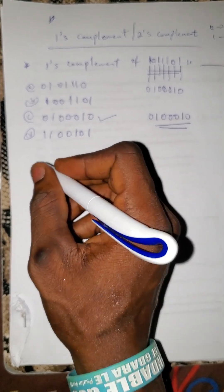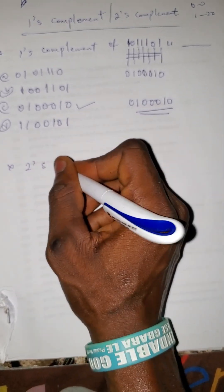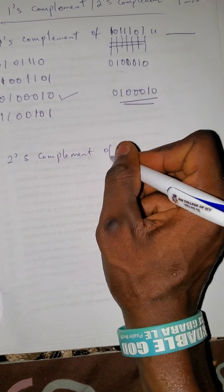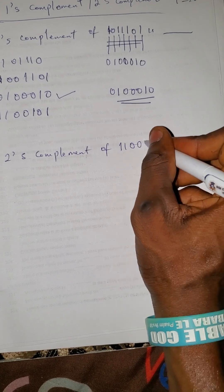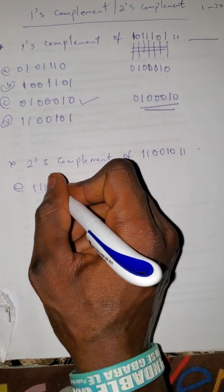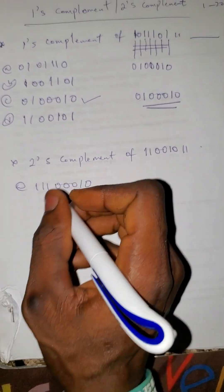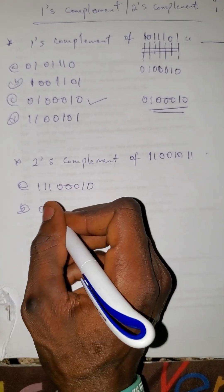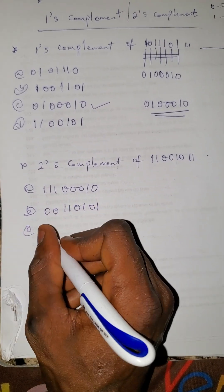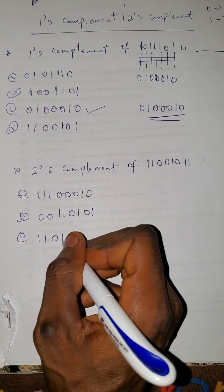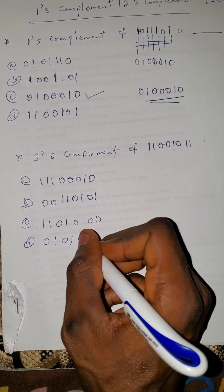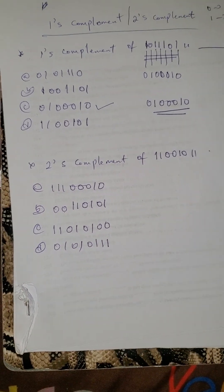Now let's find the two's complement. Find the two's complement of 11001011. Option A: 11100010, option B: 00110101, option C: 11010100, option D: 01010111.